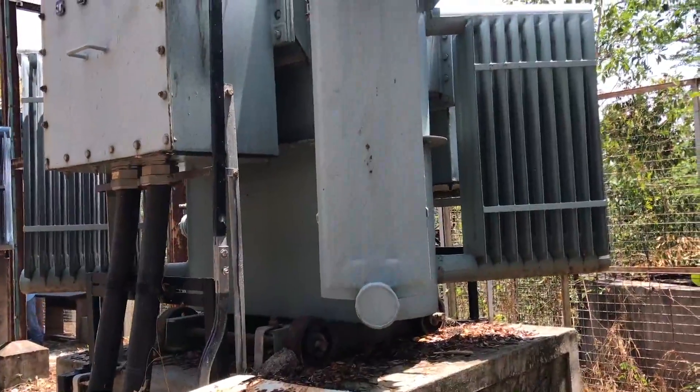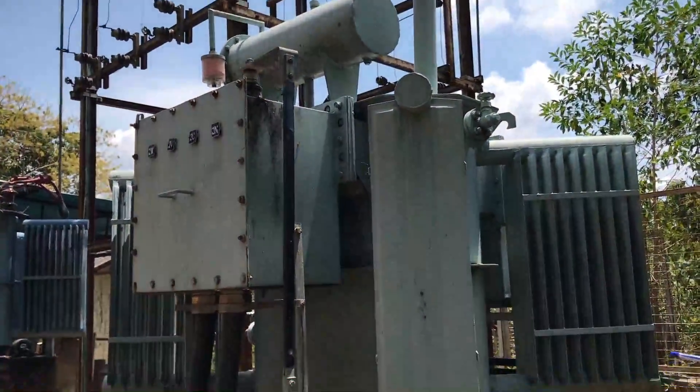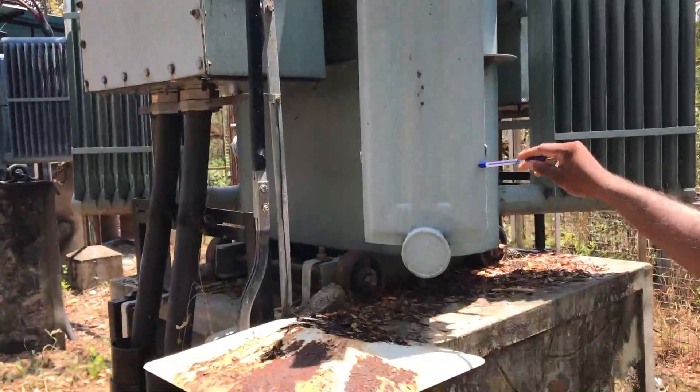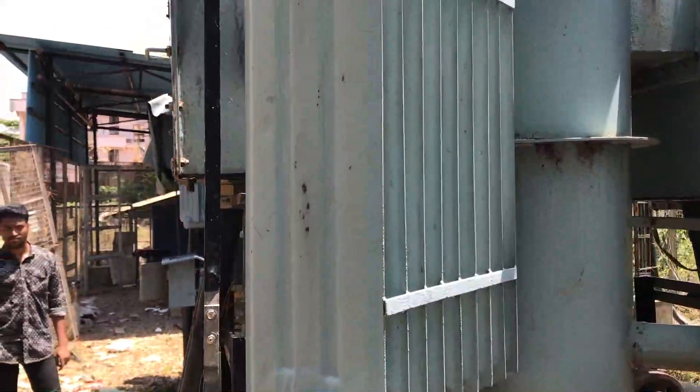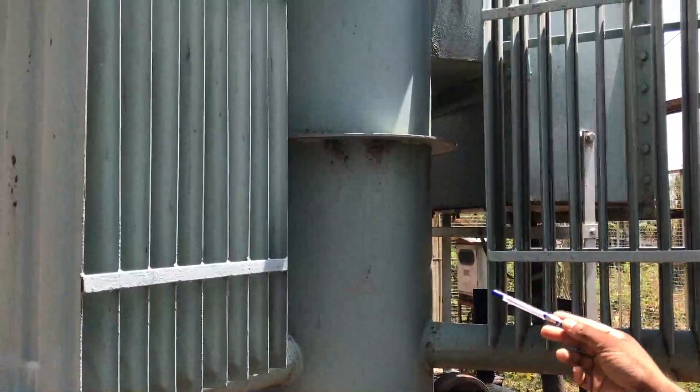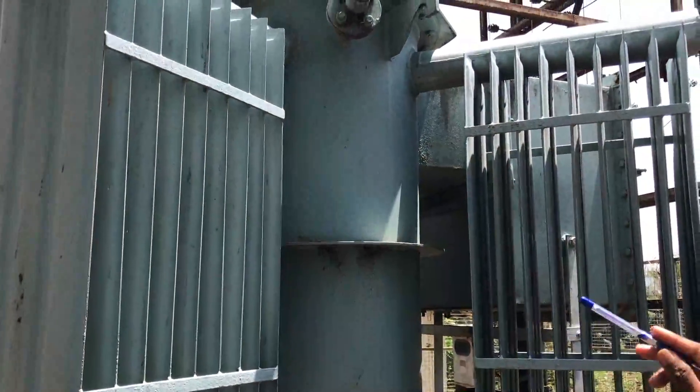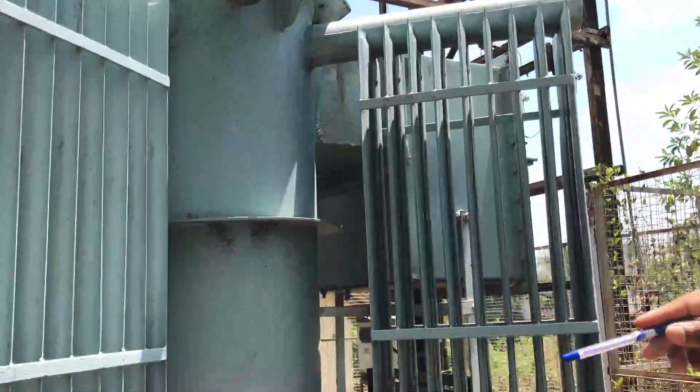This is the power transformer. Power transformer has many components. These fins are used for the cooling purpose. Number of fins in parallel. This is the main tank. This main tank contains both primary winding and secondary winding. Primary winding is connected to incoming supply and secondary winding is connected to the load.